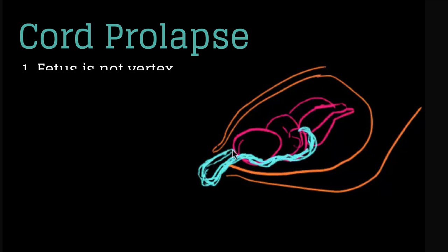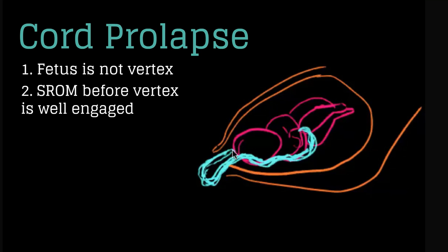Cord prolapse occurs when one the fetus is not vertex or two there is spontaneous rupture of membranes before the vertex is well engaged or three there is iatrogenic artificial rupture of membranes before the vertex is well engaged.